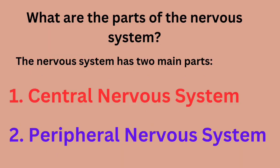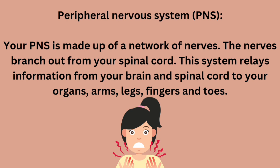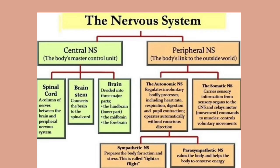There are two main parts of the nervous system: the central nervous system and the peripheral nervous system. The central nervous system consists of the brain and spinal cord. The peripheral nervous system is made up of a network of nerves and relays information from your brain and spinal cord to your body organs. There are two parts of the peripheral nervous system: the somatic nervous system, which regulates voluntary movements, and the autonomic nervous system, which regulates involuntary movements.